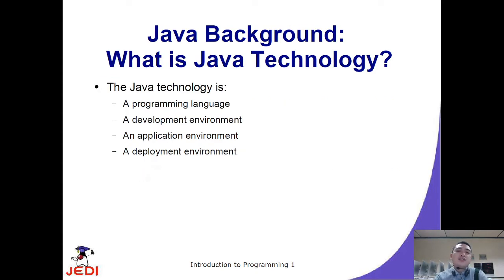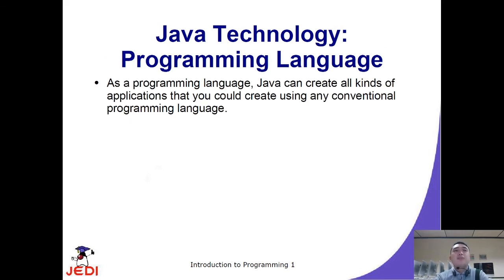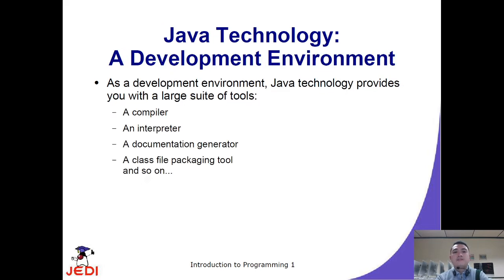So what is Java technology? First, Java can be used as a programming language — we can code and create all kinds of programs using it, just like any conventional programming language. Second, it is a development environment. In Java, you can code, compile, and interpret.